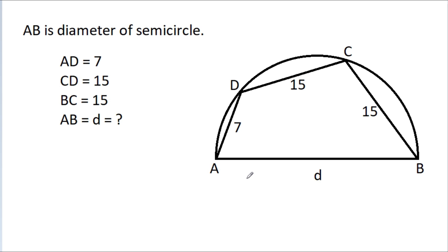In this video, we have given a semicircle with diameter AB, where AD is 7, CD is 15, and BC is 15. We have to find AB.